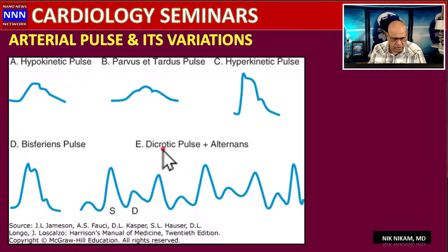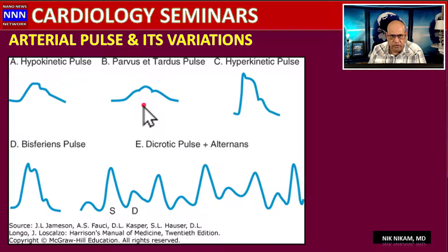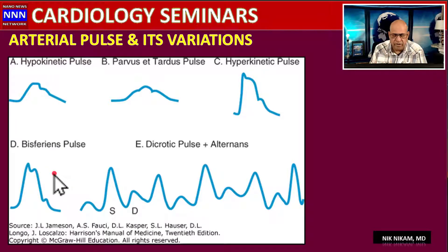There are several pulse variation patterns: a low-output hypokinetic pulse with slow upstroke; pulsus parvus et tardus, characteristic of aortic stenosis; the hyperkinetic pulse already discussed; the bisferiens pulse seen in hypertrophic cardiomyopathy with mid-cavitary obstruction; and the dicrotic pulse, to be discussed shortly. Note that blood pressure increases by approximately 10 to 20 mmHg from the ascending aorta to the femoral artery.